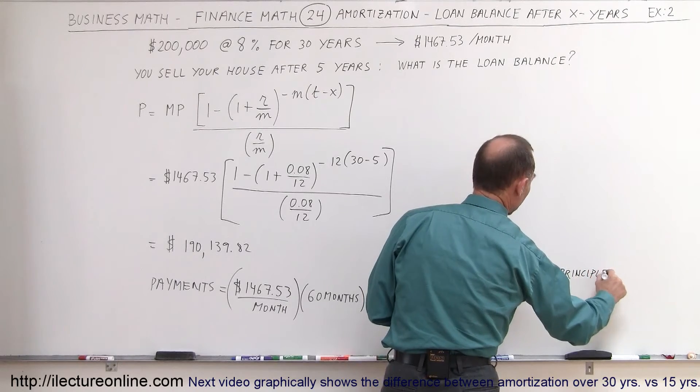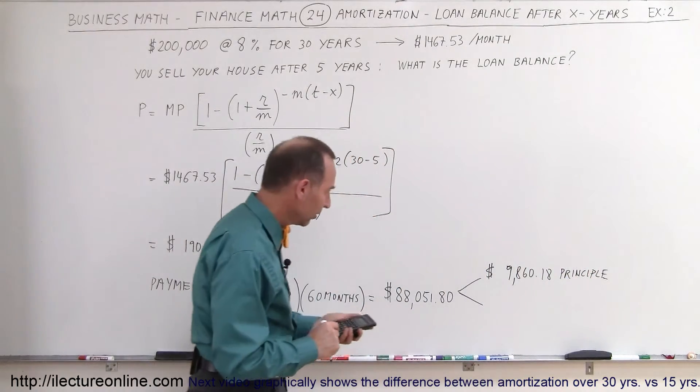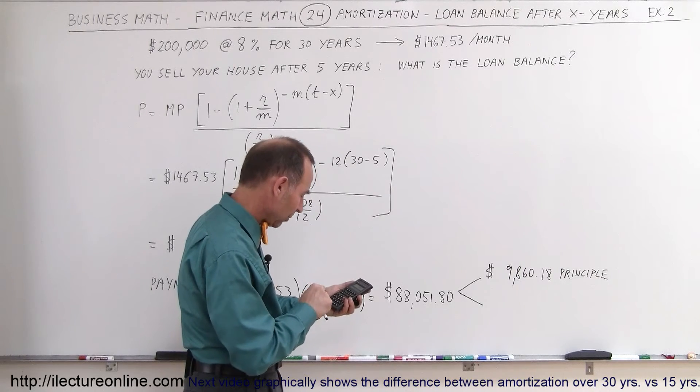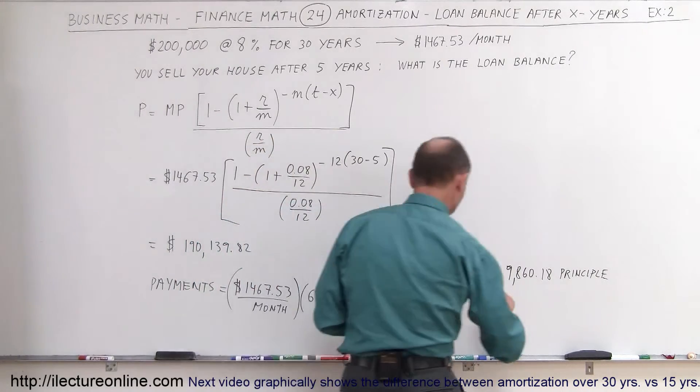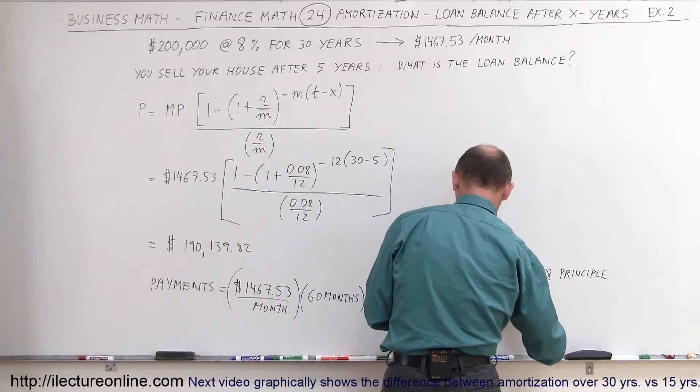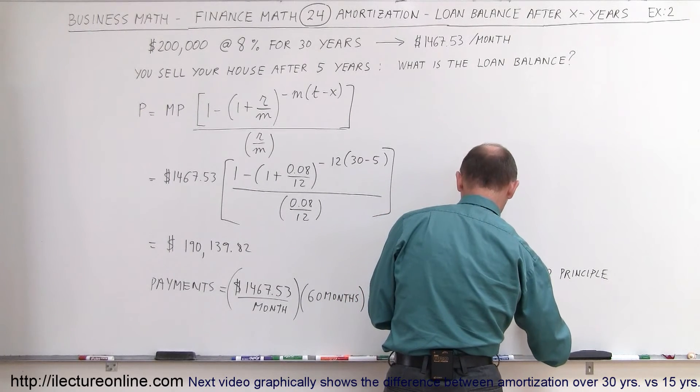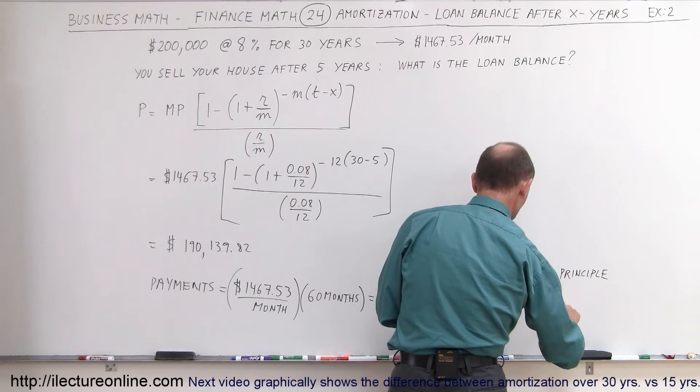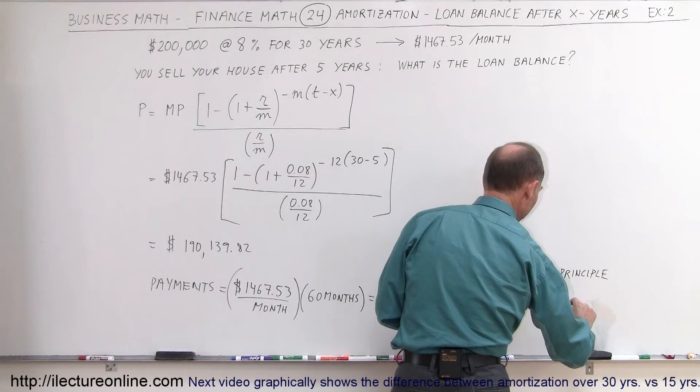And the vast majority of those five years of payments, so we take that number and we subtract it from $88,051.80. And you can then say that interest to the bank for those five years was $78,191.62. And that was interest to the bank.